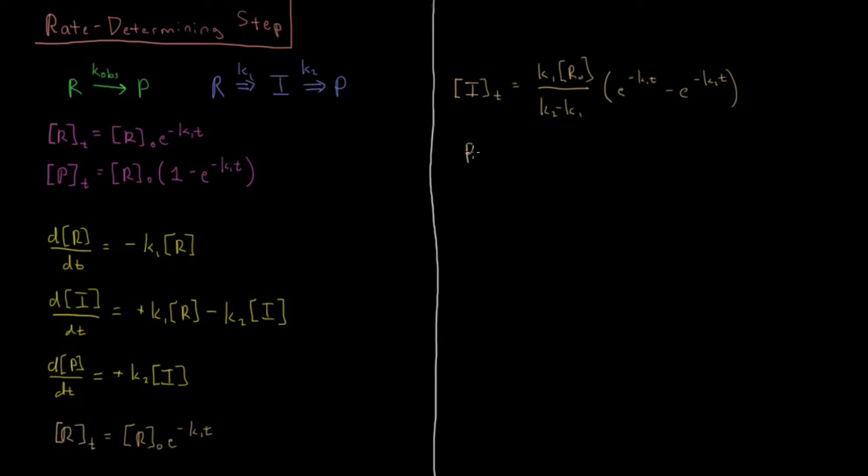For the product, concentration of p as a function of t, that if you solve that all the way out, is going to be r naught divided by k1 minus k2 times k2 e to the minus k1t plus k1 e to the minus k2t. So this is our integrated rate law for our product.